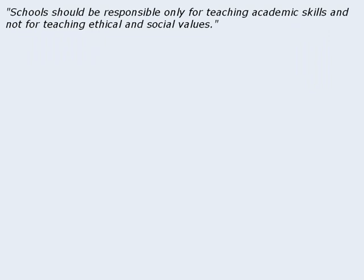Here the issue is whether or not schools should be responsible for teaching ethical and social values. To begin, we're going to brainstorm as many points as we can for both sides of the issue, and our goal will be to generate three to five points for each side. We're just looking for brief points to begin — we'll elaborate on some of these points later on. Let's begin with the side that says schools should be responsible only for teaching academic skills.